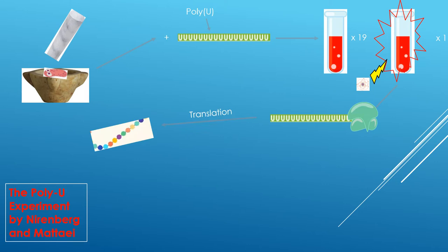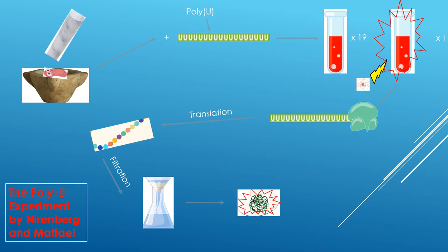They then let translation take place, forming a polypeptide chain, and then filtered out the solution, leaving a protein on the filter paper. They checked the filter paper to see if the protein was radioactive, and if it was, then that amino acid codes for that initial codon. That process was performed for all amino acids. The result was that the codon UUU codes for phenylalanine.